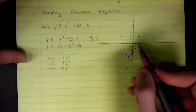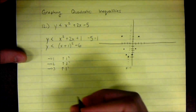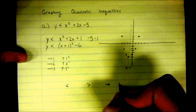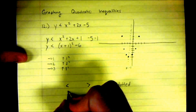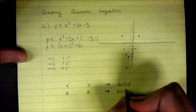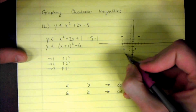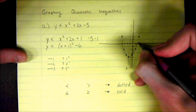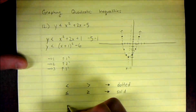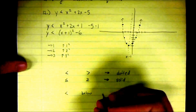Notice that we have a less than here. If there's no equal-to part in your inequality sign — so it's just less than or greater than — that means your line is dotted. If it was less than or equal to, or greater than or equal to, then your line would be solid. In this case we just have less than, so we draw a dotted line.